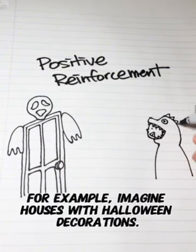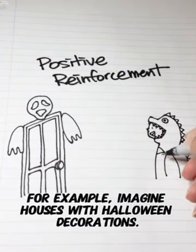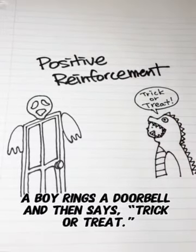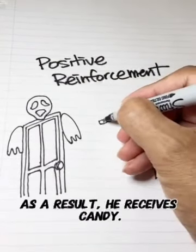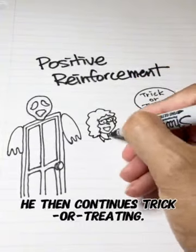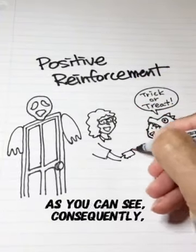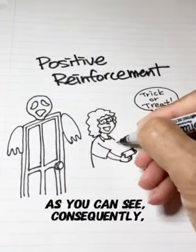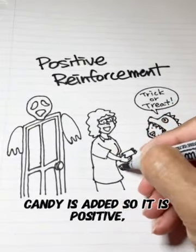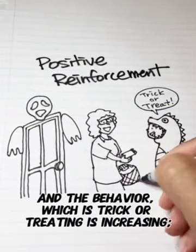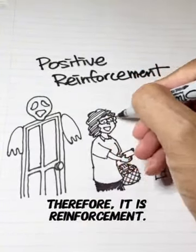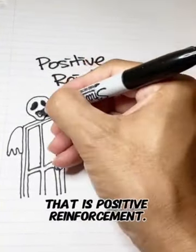For example, imagine houses with Halloween decorations. A boy rings a doorbell and then says trick-or-treat. As a result, he receives candy. He then continues trick-or-treating. As you can see, candy is added as a consequence, so it is positive. And the behavior, which is trick-or-treating, is increasing — therefore, it is reinforcement. That is positive reinforcement.